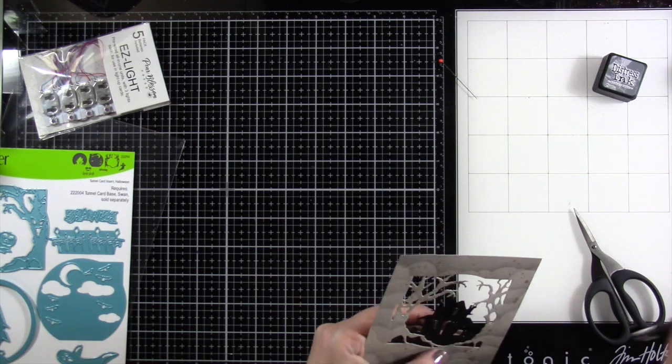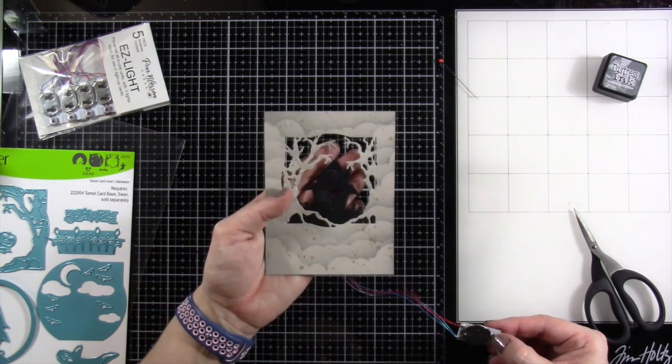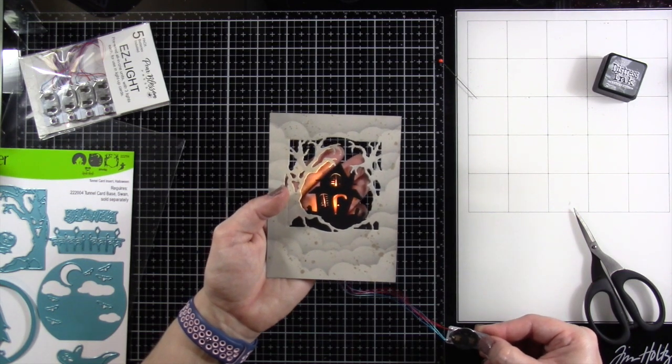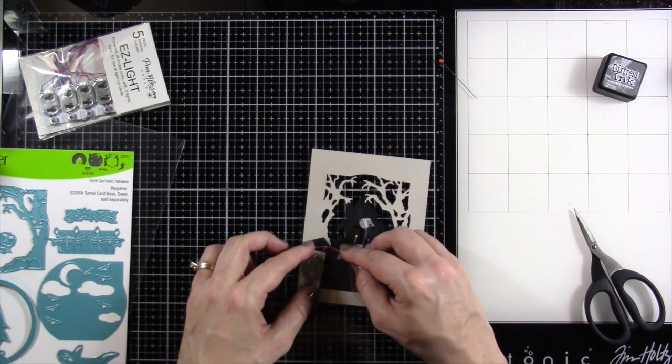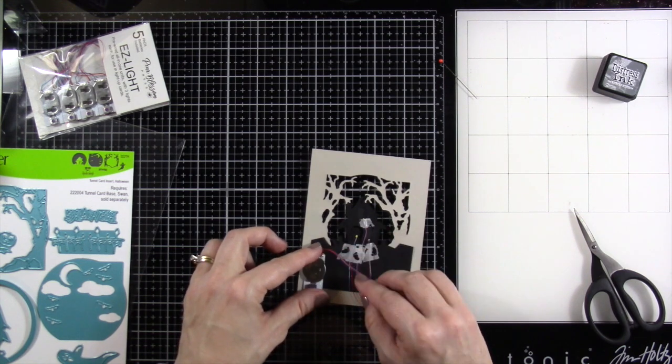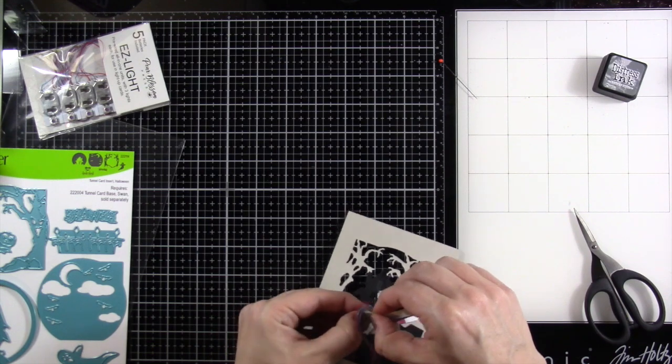I already love it. And it's not even completely put together. So yes. And then we're going to take our mechanism itself and we do need to adhere it to the back. I like to make sure that my battery is accessible just in case whoever receives this wants to replace the battery at some point, because let's be honest, it's probably going to be me because I'm going to keep playing with this. I'm going to need to replace that battery.